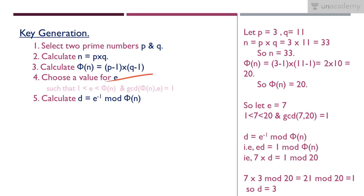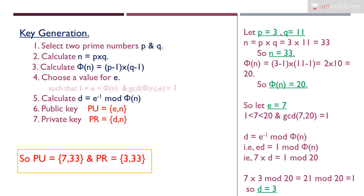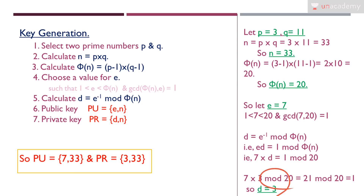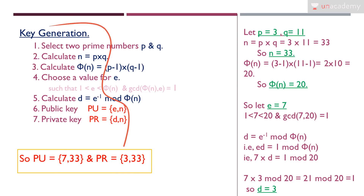We now have all values: P = 3, Q = 11, n = 33, φ(n) = 20, e = 7, and d = 3. The public key is the pair (e, n) = (7, 33), and the private key is the pair (d, n) = (3, 33). Now that we have the key pairs, we can proceed to encrypt and decrypt data.